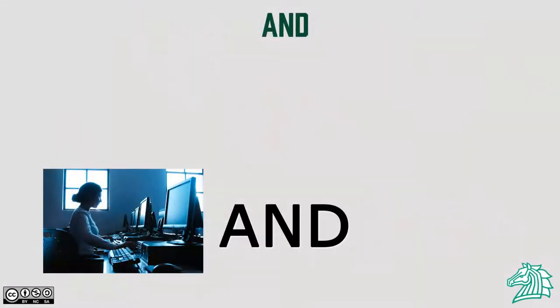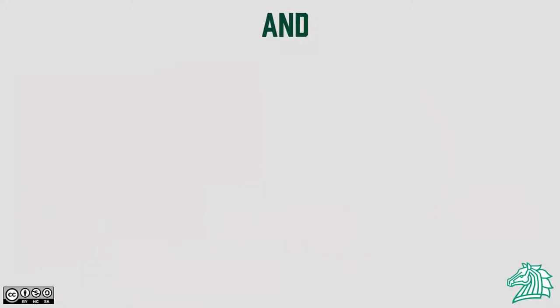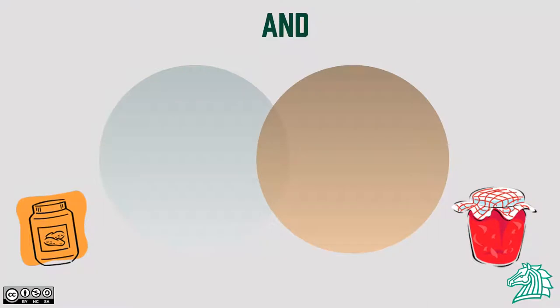To start understanding Boolean operators, let's begin with AND. AND is used to connect two ideas or phrases together as a means to narrow down what you're looking for. For example, you want information on foods that include peanut butter and jelly.